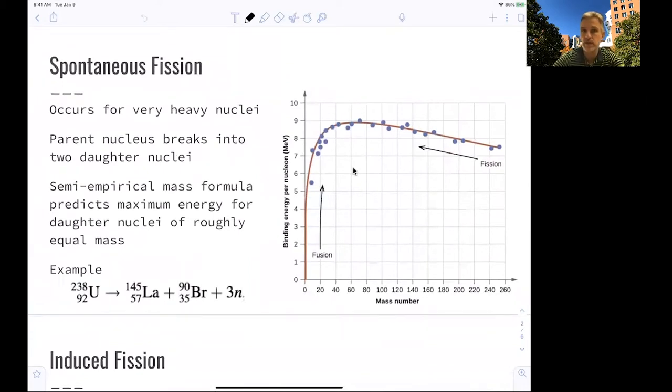Nuclear fission occurs in very heavy nuclei, as you can see in this plot here, fission processes in this part of the spectrum. What can happen spontaneously is that the parent nucleus just simply breaks up into daughter nuclei and maybe some additional neutrons. One example is the decay of uranium 238.